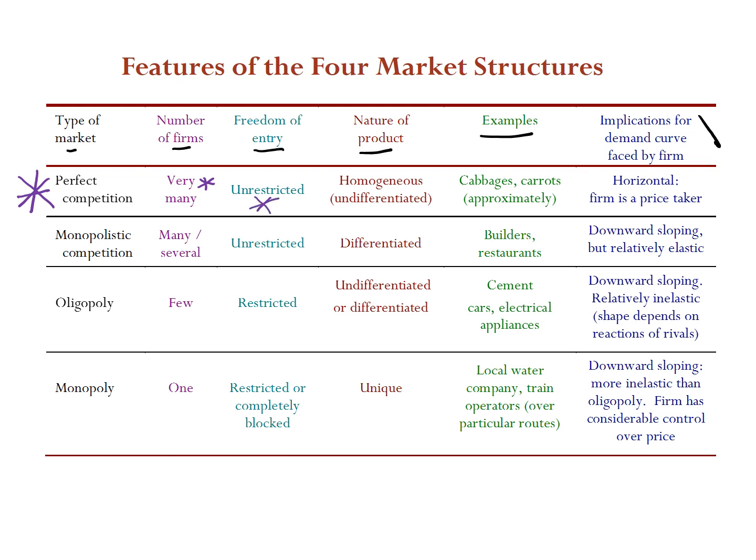The type of product sold in perfect competition is homogeneous — everybody sells exactly the same kind of product. Think of farmers selling salt, the same taste, texture and quality. Examples include a farmers' market selling cabbages, carrots, or wheat — all the same undifferentiated product.